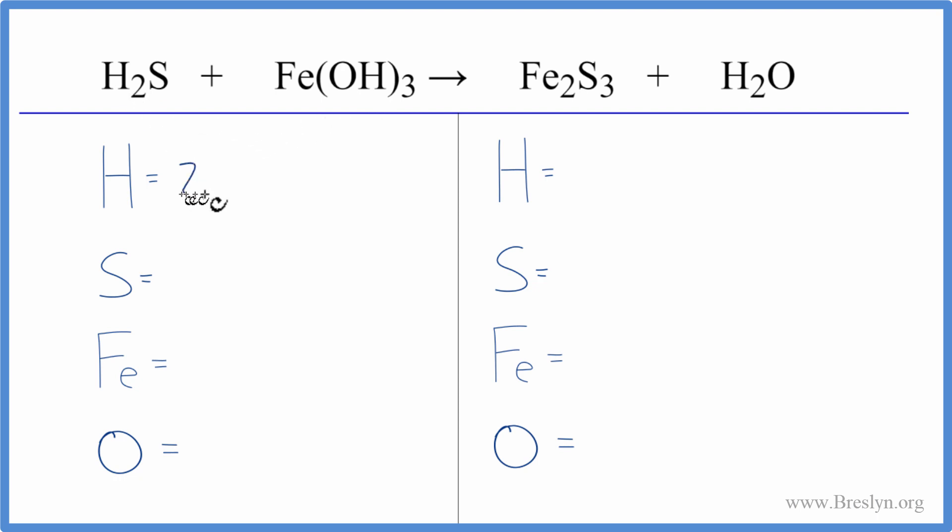We have two hydrogens here, and then we've got to count these hydrogens as well. So we have one hydrogen here times three. That gives us three. So now we have five hydrogen atoms.